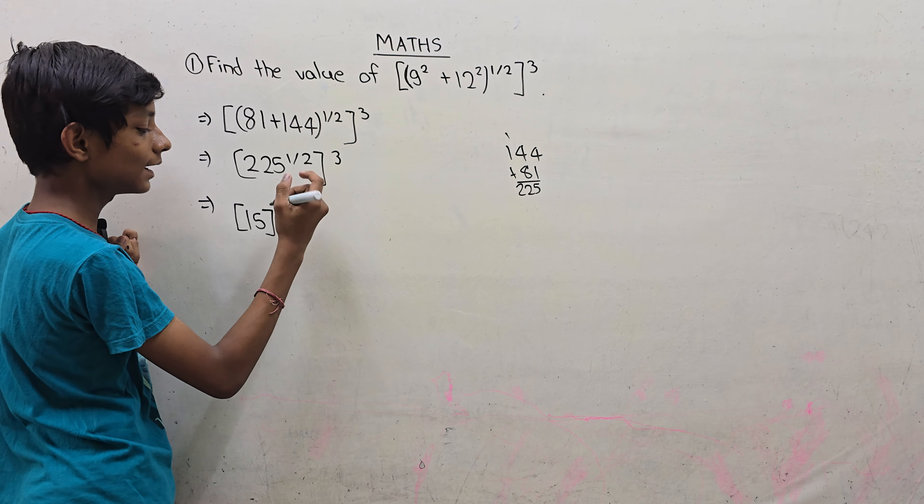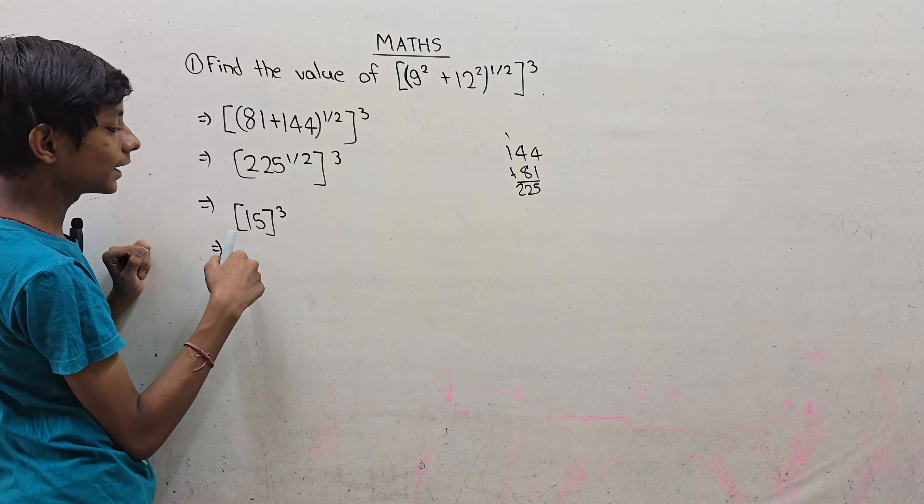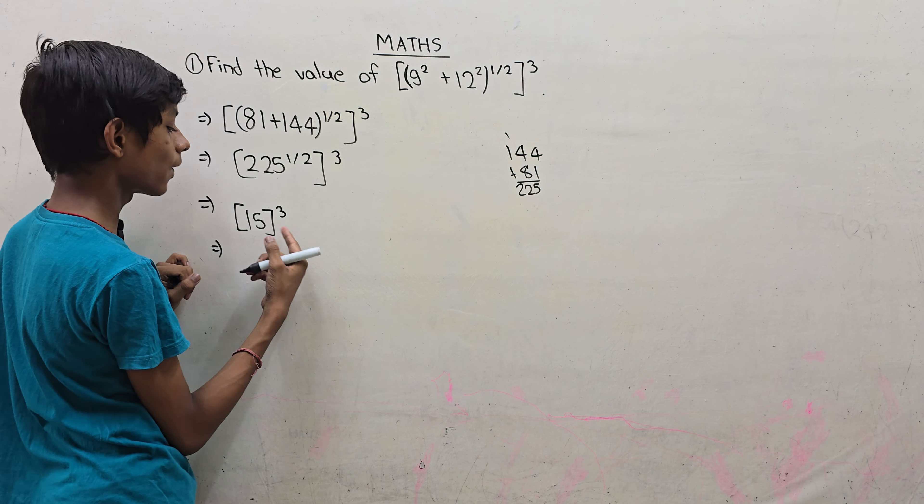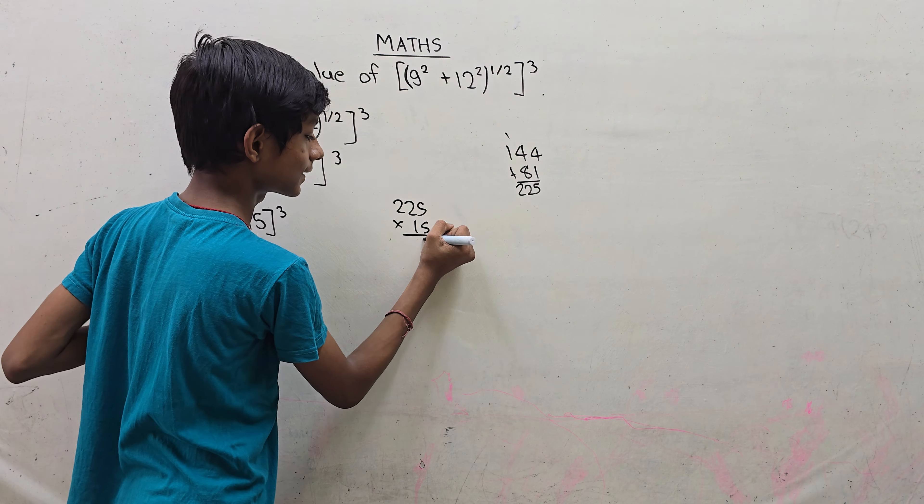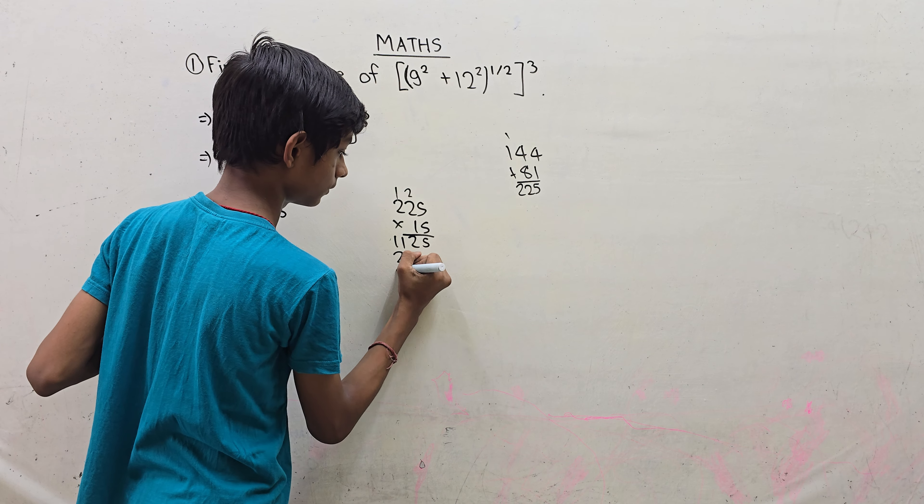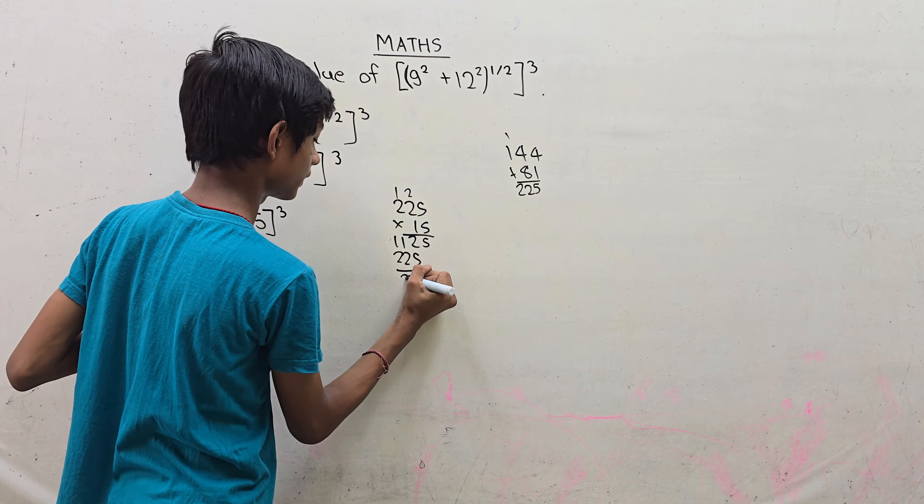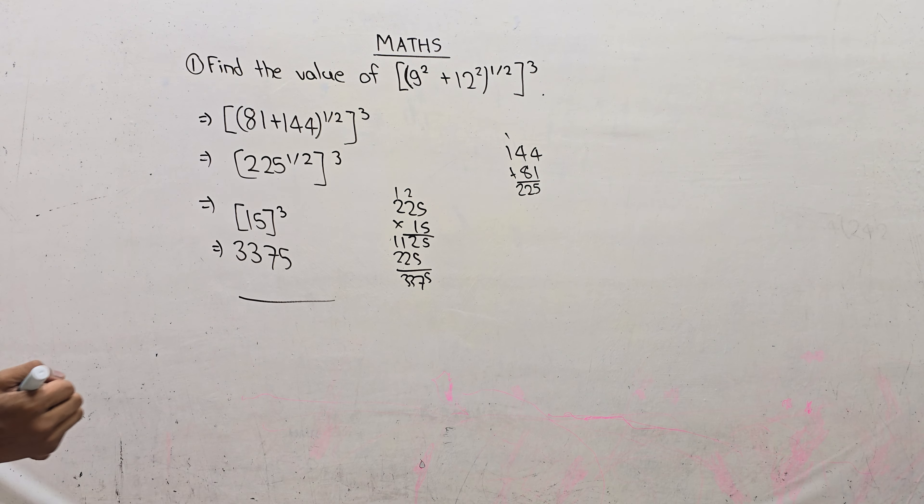So this value of 15 raised to power 3. Now this value is 15 times 15 times 15. 15 times 15 is 225, 225 times 15 is the answer. This is 3375. This is the correct answer.